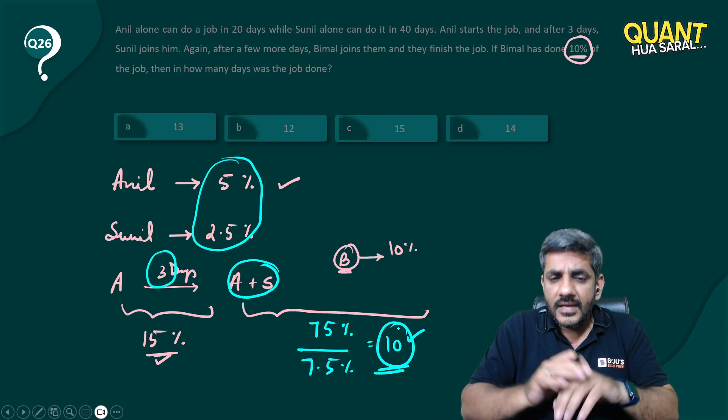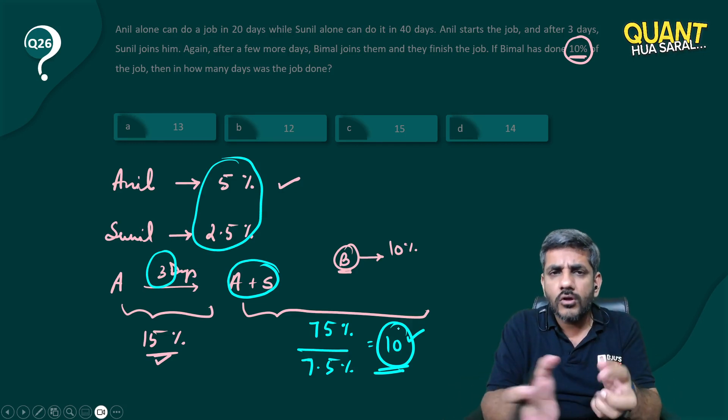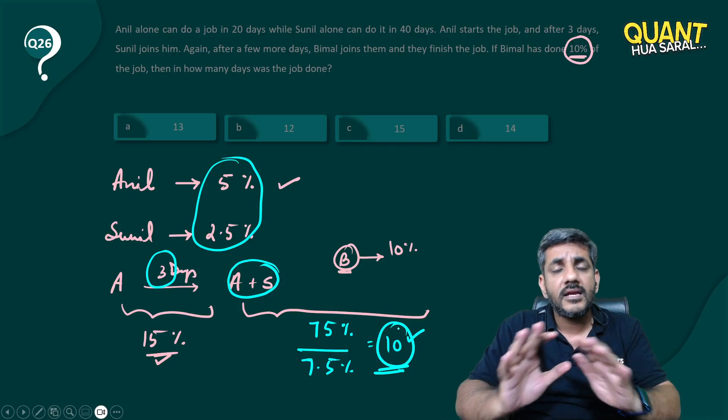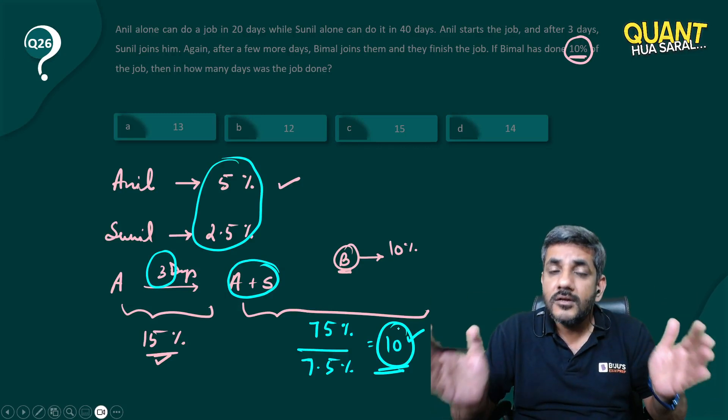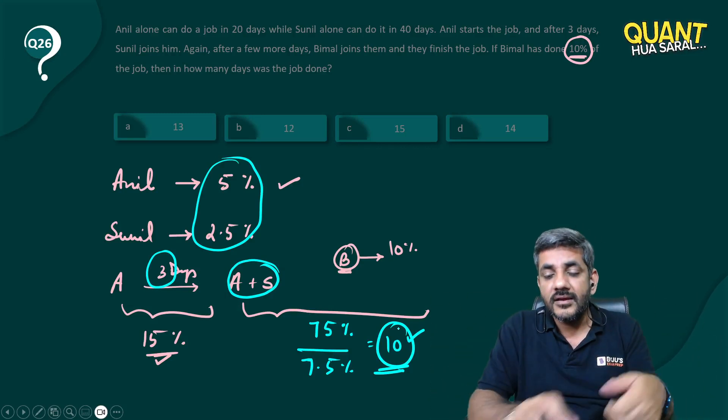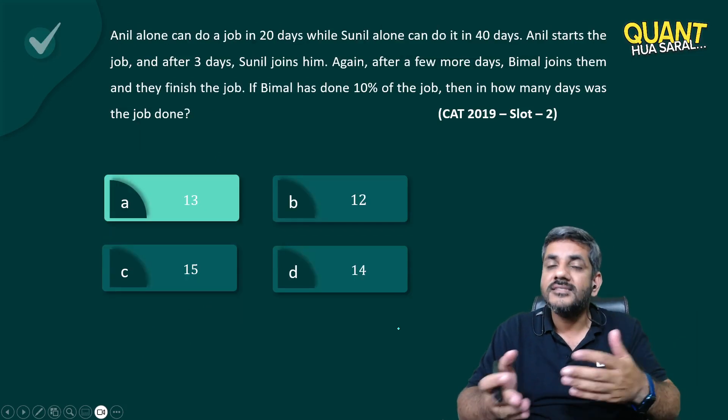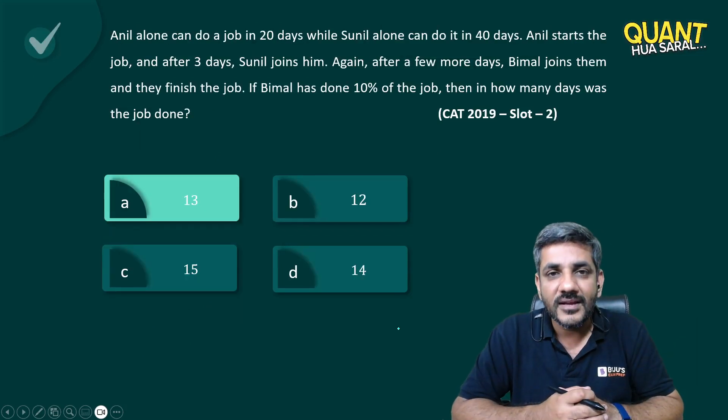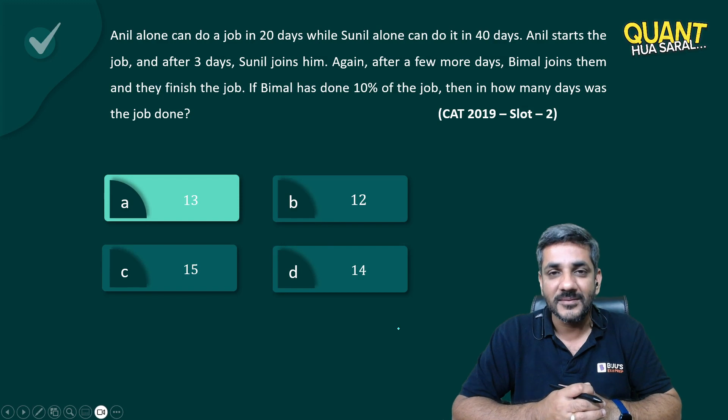In those 10 days only, Bimal also worked for some time, but ultimately the number of days taken by them to complete the work is 10 plus 3, which is equal to 13, and that's the right answer. Another aptitude way of solving the question. Thank you very much.